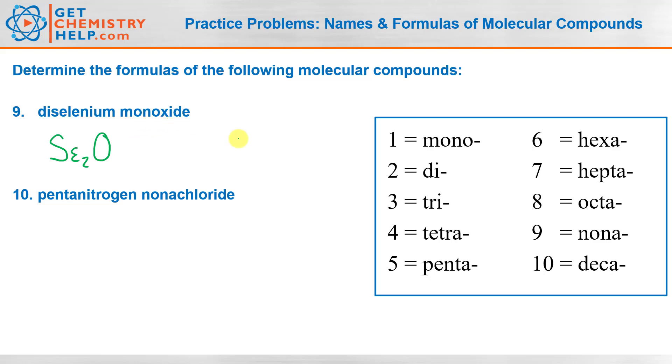And our last one, pentanitrogen nonachloride. So nitrogen, and penta would be five, so N5. Nonachloride, we see nona is nine, so nine chlorines, N5Cl9.